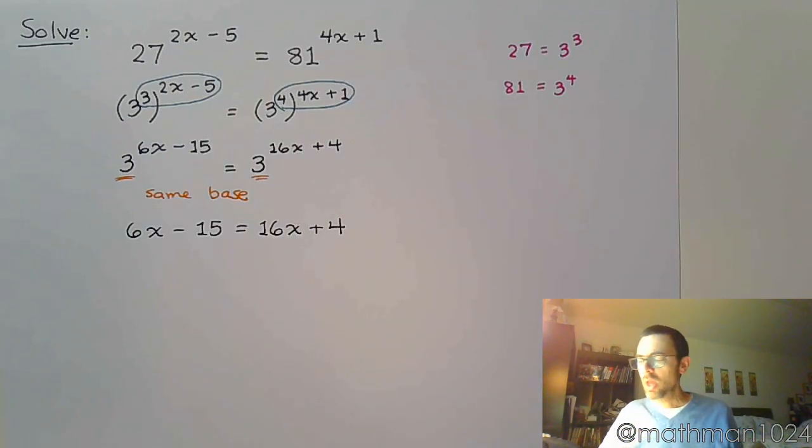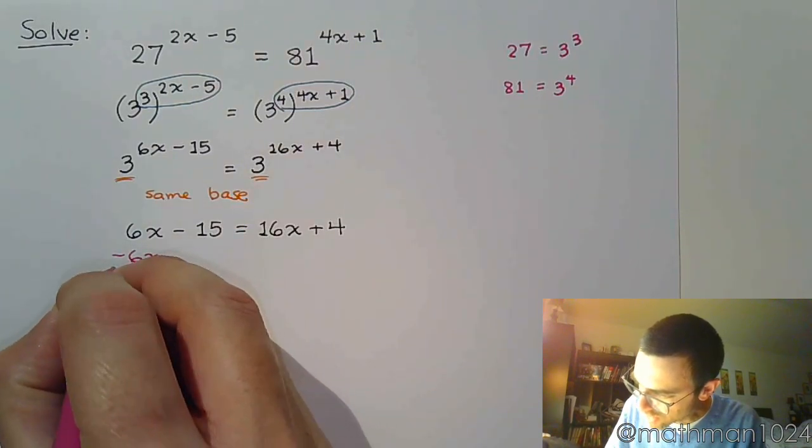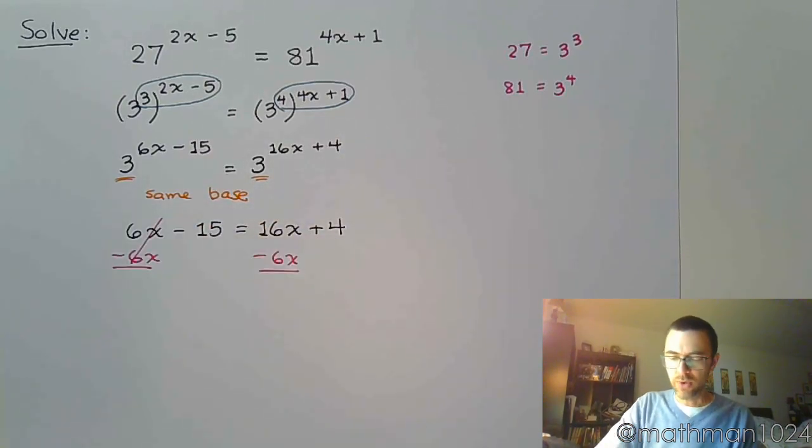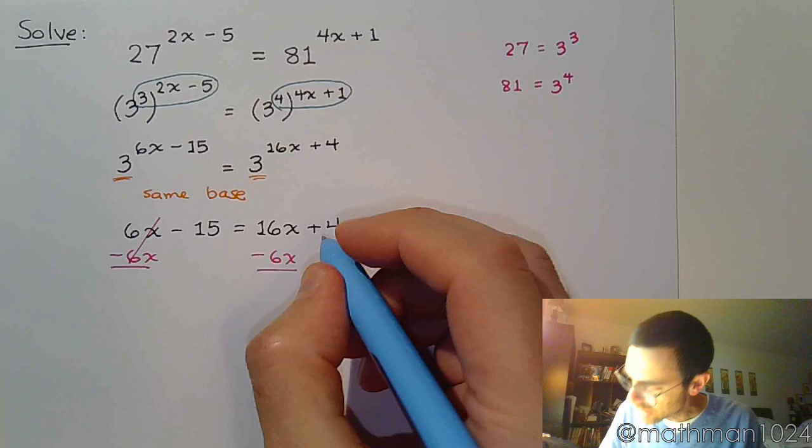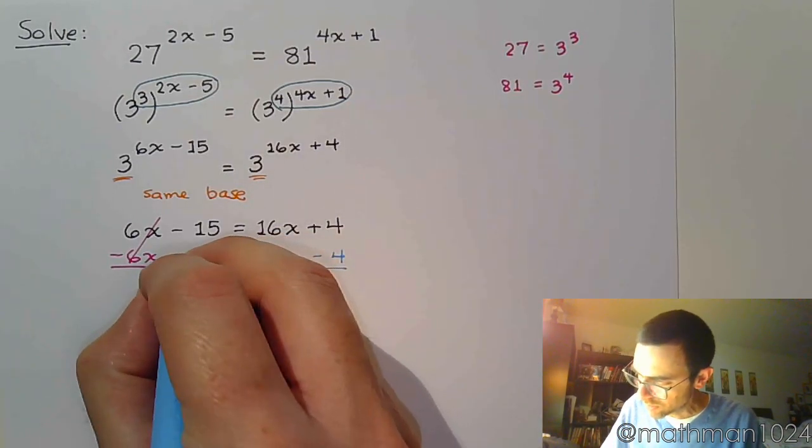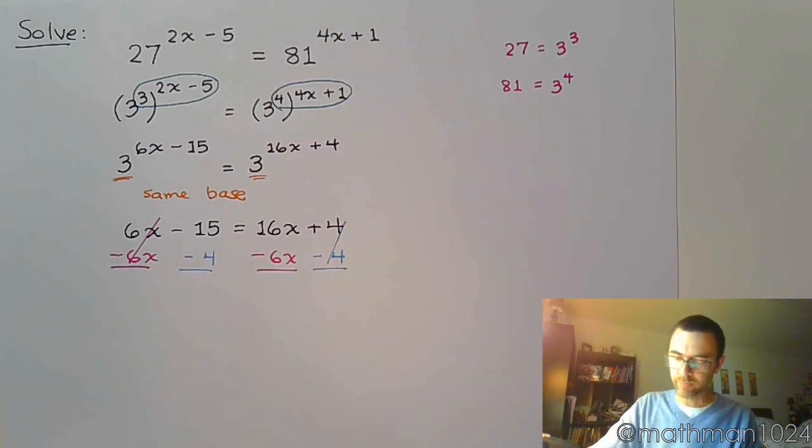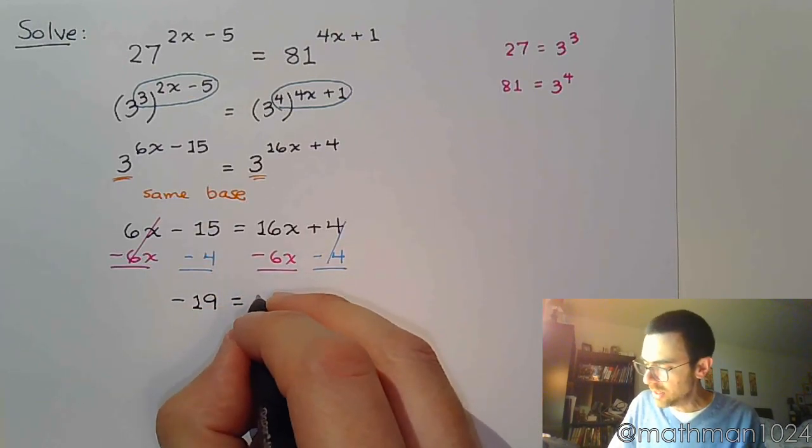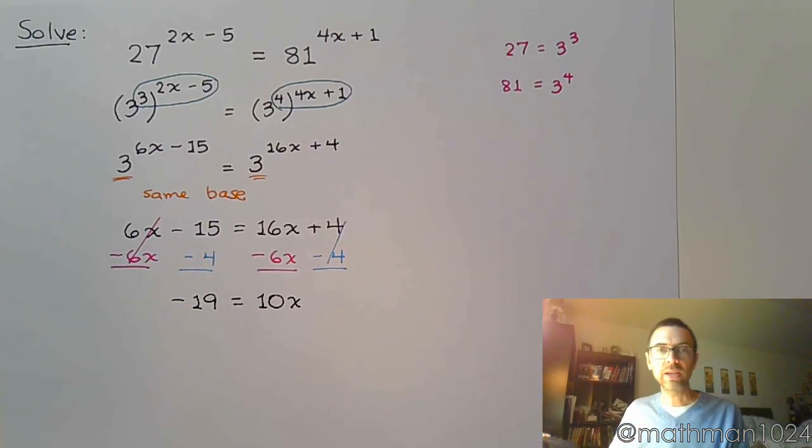Now, this is a nice linear equation. Our job is to get all the x's to the same side, get constants on the other side. But you want to make sure that you do this in such a way that the coefficient of x stays positive. So, I'm going to move my variable to the right. So, I'm going to subtract 6x. And if I'm moving my variable to the right, that means my constant needs to go to the left. So, I'm going to subtract 4 on both sides.